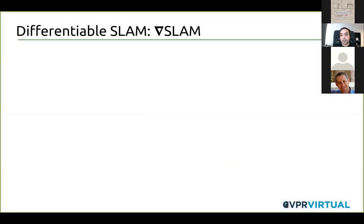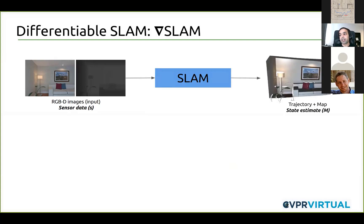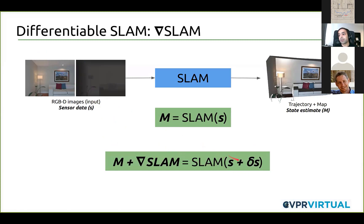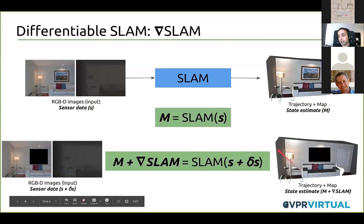In this work, we take a new approach to SLAM from the perspective of differentiability. If you look at a traditional SLAM system, it receives sensor data and then the SLAM pipeline produces a trajectory and a map — a state estimate that we denote by M. SLAM is a function that takes sensor inputs and gives you a state estimate of the environment. What if this mapping were differentiable? That would tell us that if you took the raw sensor measurement — like the images — and perturbed it by some delta S, it would tell you how much your map or trajectory estimate would change.